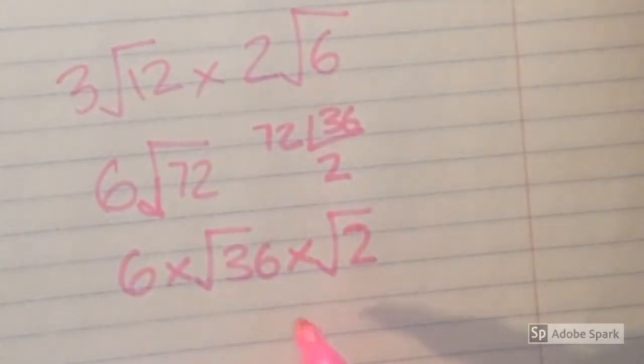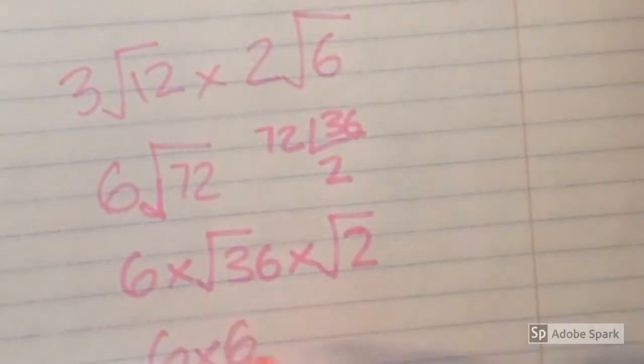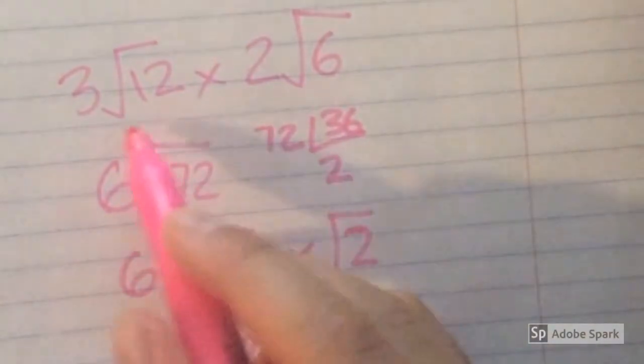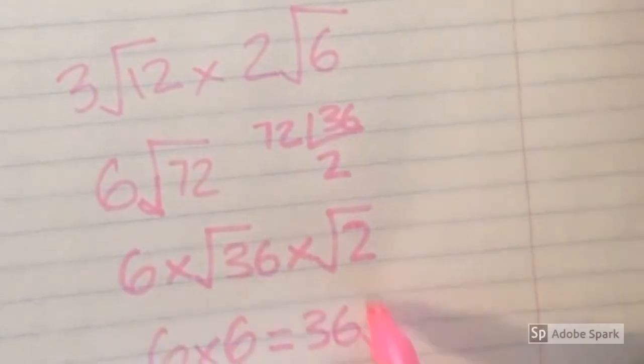We need to get 36 out of the radical sign, so we divide 36 by 6, and that equals 6. 6 times 6 equals 36, so our answer is 3 radical 12 times 2 radical 6 equals 36 radical 2.